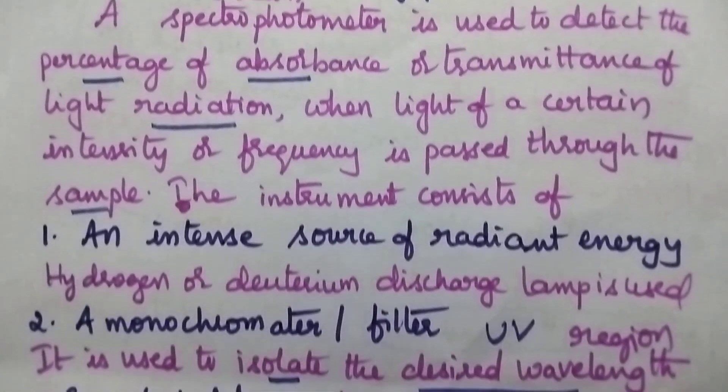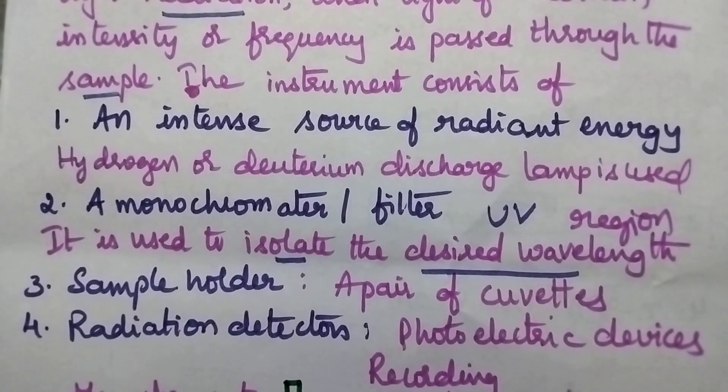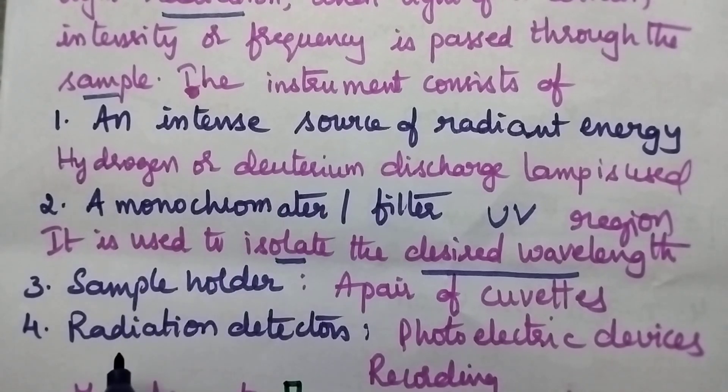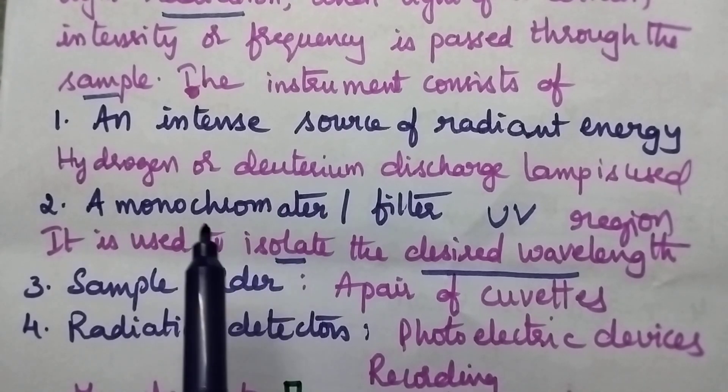A double beam spectrophotometer consists of an intense light source, a monochromator, sample holder, and radiation detectors.